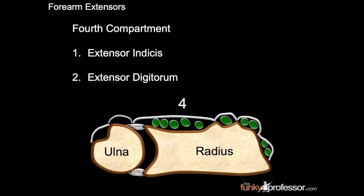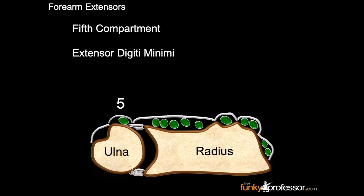The fourth compartment contains extensor indices and extensor digitorum. The fifth compartment contains extensor digiti minimi. And finally, the sixth compartment contains extensor carpi ulnaris.